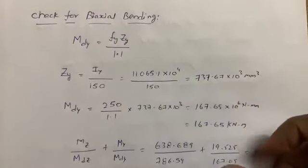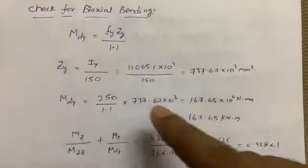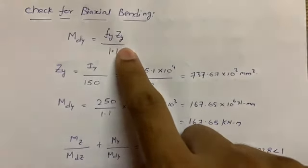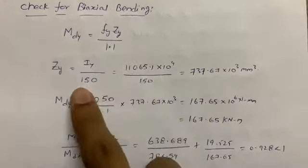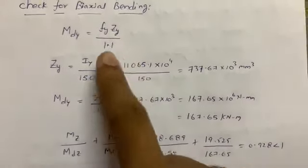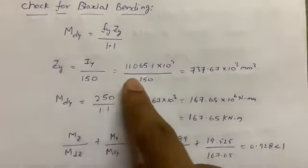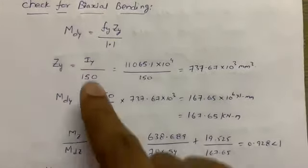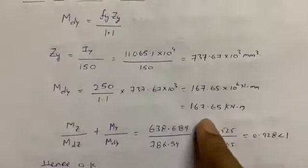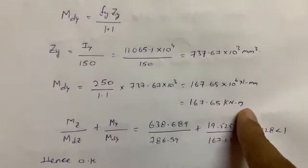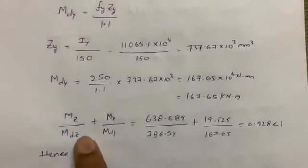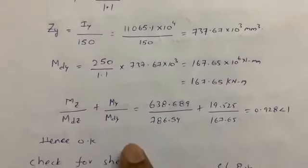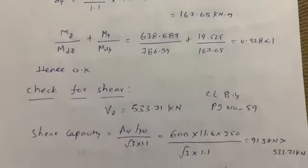For the biaxial bending check: Mdy = fy × Zy / 1.1, where Zy = Iy / 150. Substituting fy = 250 MPa gives Mdy = 167.65 kN·m. Applying the combined biaxial bending interaction check Mz/Mdz + My/Mdy yields a value less than 1.0 — satisfied.